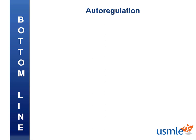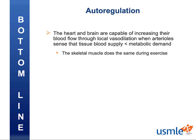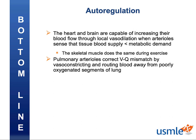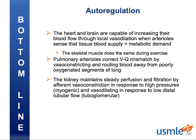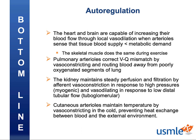Thanks for tuning in, everyone. There's a lot of different mechanisms of autoregulation out there, but here's the bottom line. The heart and brain are capable of increasing their blood flow through local vasodilation when the arterioles sense that the tissue blood supply is less than the metabolic demand. The skeletal muscle does the same, but only during exercise. Pulmonary arterioles correct VQ mismatch by vasoconstricting and routing blood away from poorly oxygenated sections of the lung. The kidney maintains steady perfusion and filtration by afferent vasoconstriction in response to high blood pressures — myogenic feedback — and vasodilating in response to low tubular flow — tubuloglomerular feedback. Cutaneous arterioles maintain temperature by vasoconstricting in the cold, preventing heat exchange between blood and the external environment.